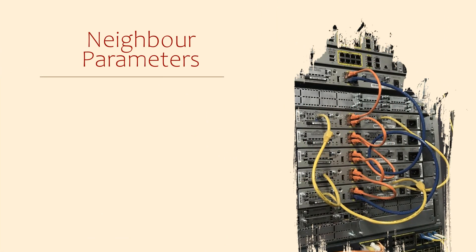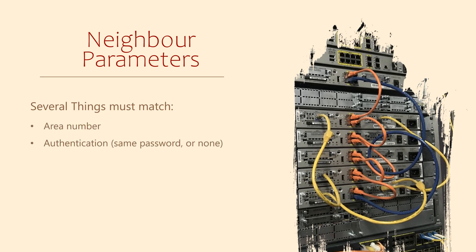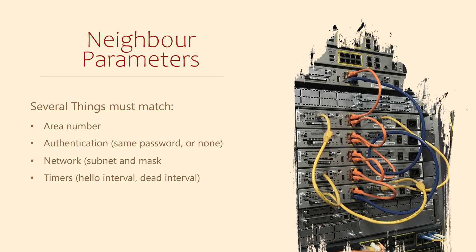There's one last thing to say about forming adjacencies. Routers use hello messages to share information about themselves. There are a few details in these messages that must match before neighbors will form. These include being in the same area, having the same authentication details or no authentication, connected interfaces must match with the same network and subnet mask, timers — that is, how often hello messages are sent as well as the dead interval — and the MTU of the connected interfaces. That last one has caught me out a few times in the real world.